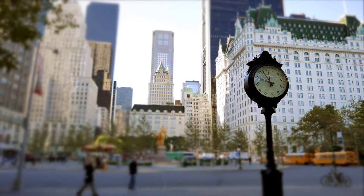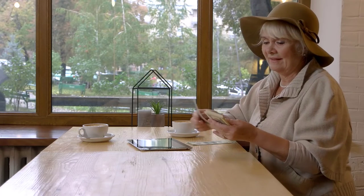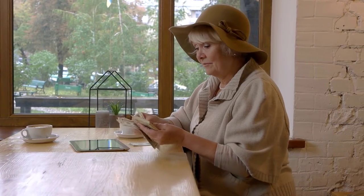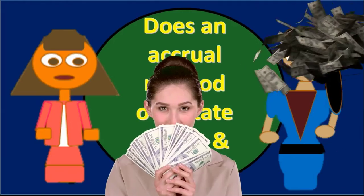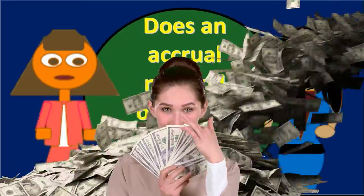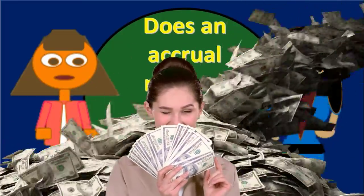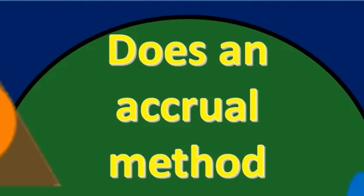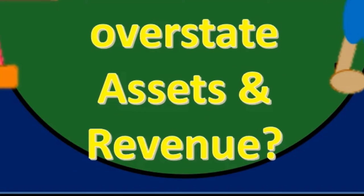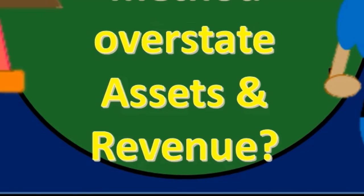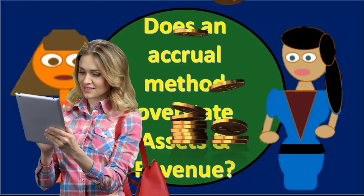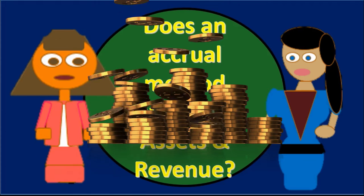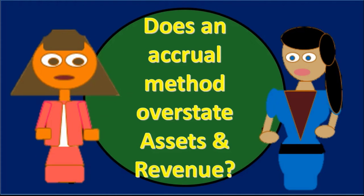What really drives whether a company needs an accrual method — aside from being publicly traded — is the timing issue. If you are the type of company that bills clients before receiving payment, you need to use an accrual method for receivables because you need to track who owes you money. The accounts receivable account tracks that. So a law firm or CPA firm that invoices clients is pretty much required to use an accrual method, at least on that component, so that it has something to track who owes money.